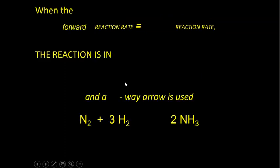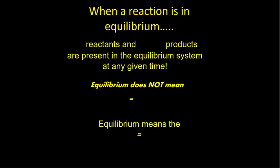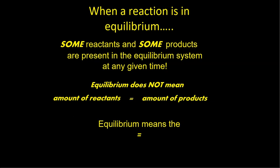When the forward reaction rate is equal to the reverse reaction rate, the reaction is said to be in equilibrium, and a two-way arrow is used. At equilibrium, some reactants and some products are present at any given time. Equilibrium does not mean the concentration of reactants equals the concentration of products — it means the forward rate equals the reverse rate.